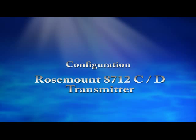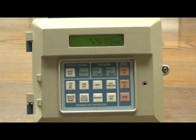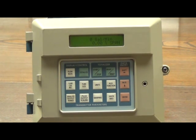Hi, this is Pete Olivier and I work in the flow room at Thompson Equipment Company. Today I'm going to show you how to configure an 8712 C or D secondary, which you may or may not have sitting on the shelf. We're going to configure it on the assumption that you're going to match it to a tube that you already have in the field.